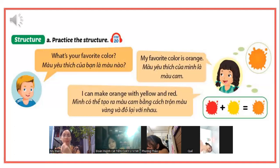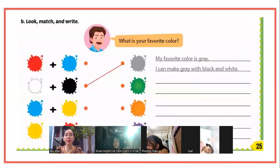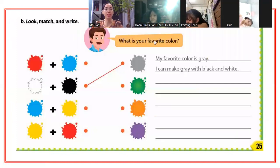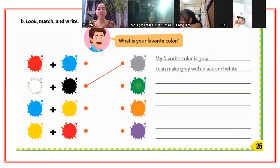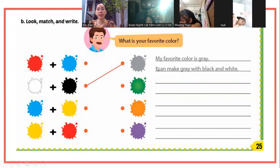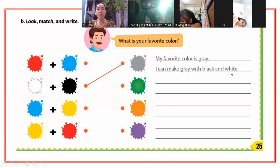Hai màu này trộn lại thành màu cam. Vậy thì các bạn làm bài tập look and write. Nhìn, nói và viết. What is your favorite color? Màu yêu thích nhất của bạn là gì? My favorite color is red. I can make gray - tôi có thể tạo ra màu xám - with black and white - bằng màu đen và màu trắng.